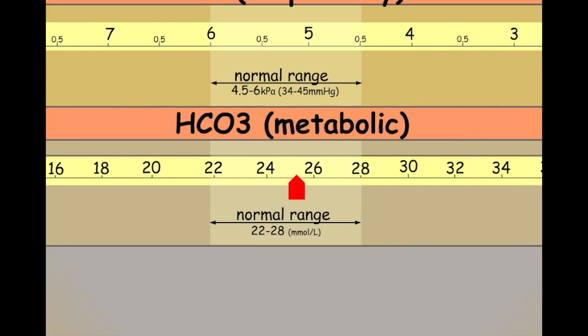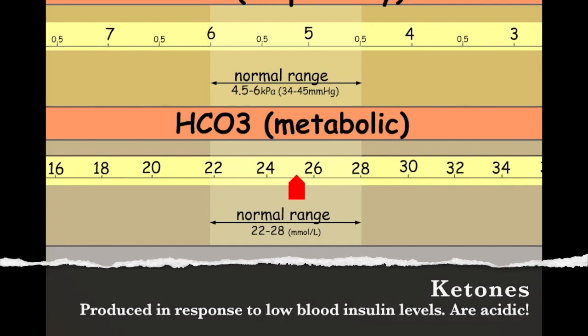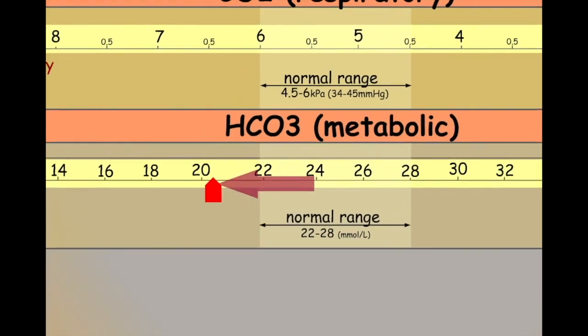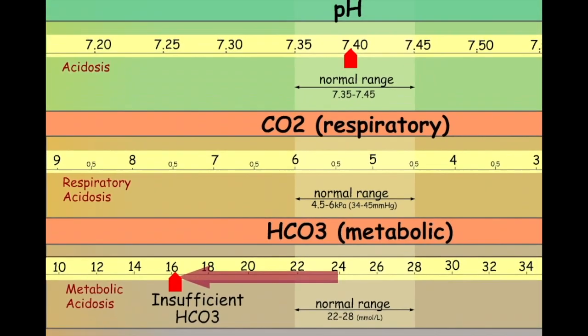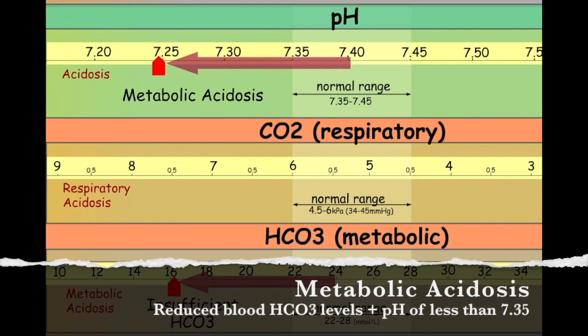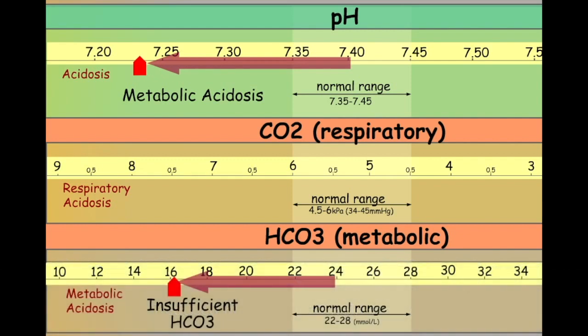For example, a type 1 diabetic who doesn't take their insulin will start to produce ketones. Ketones are acidic. Acid will build up in the blood at a faster rate than the kidneys can produce bicarb to buffer its effect. The pH will be pushed downwards in an acidotic direction and the bicarb will be used up. Blood bicarb levels will begin to decrease. Reduced bicarb levels therefore indicate a metabolic acidosis.